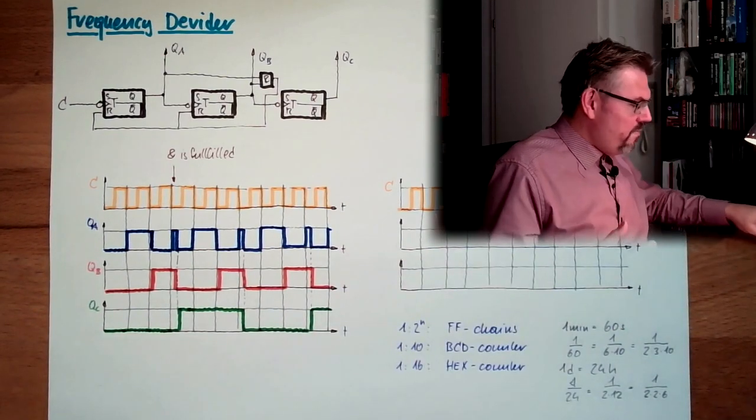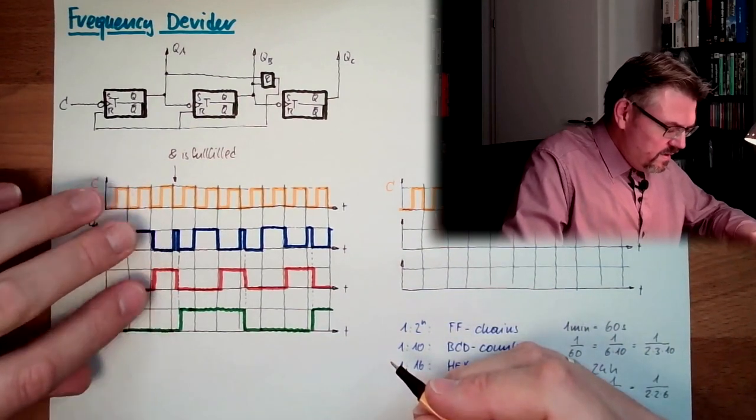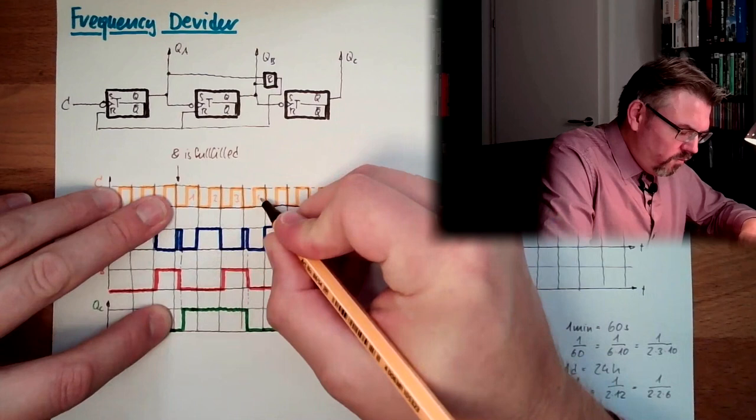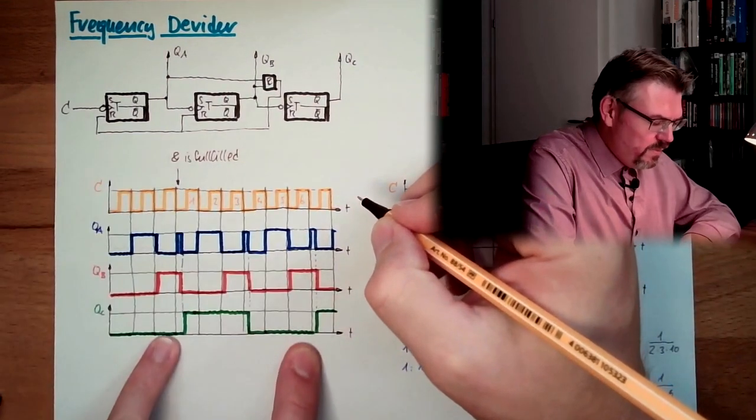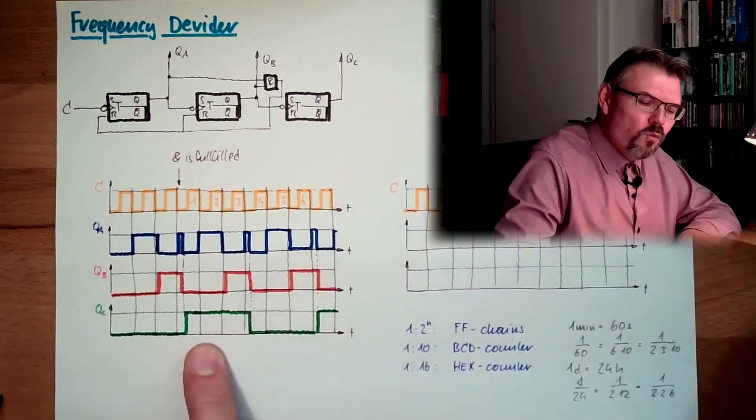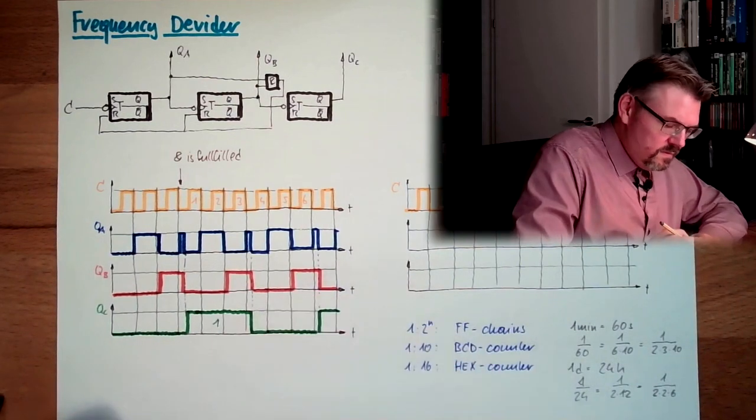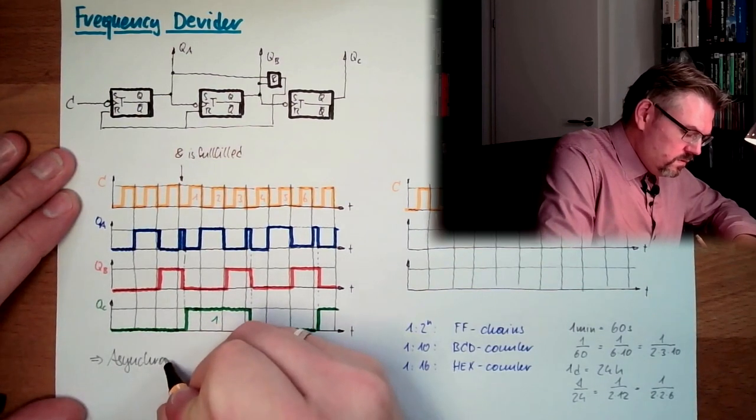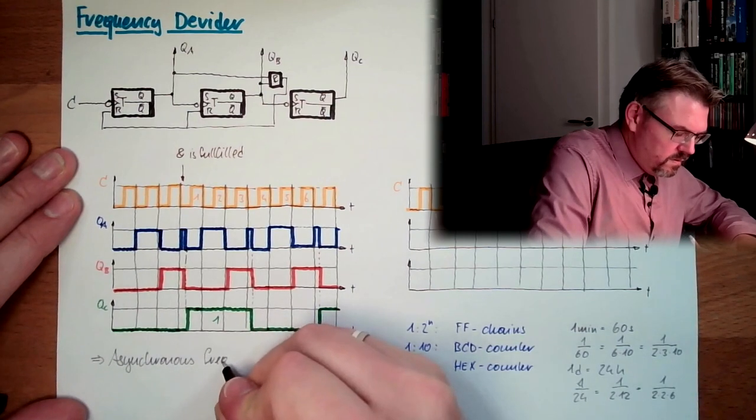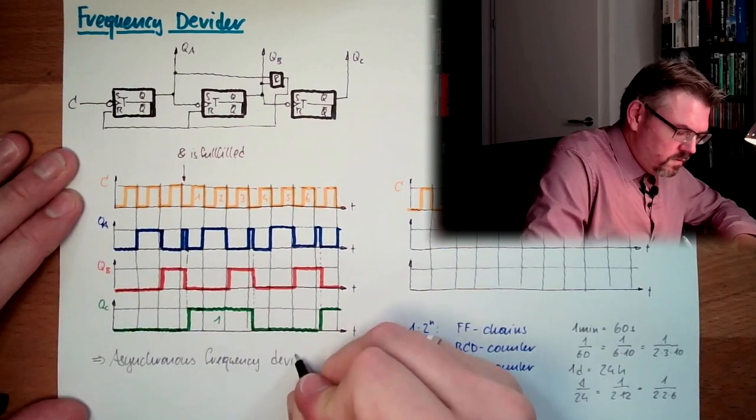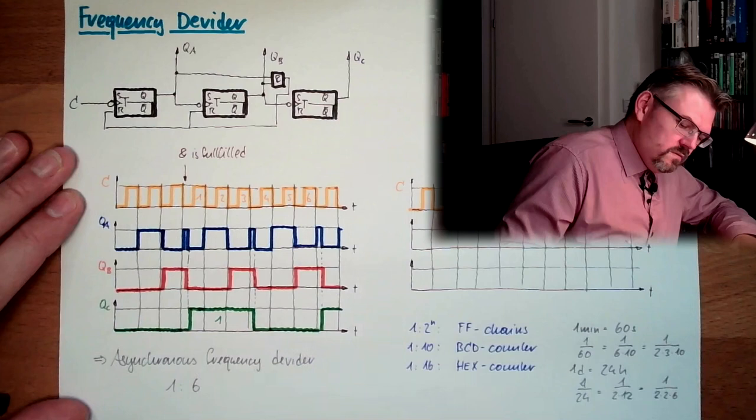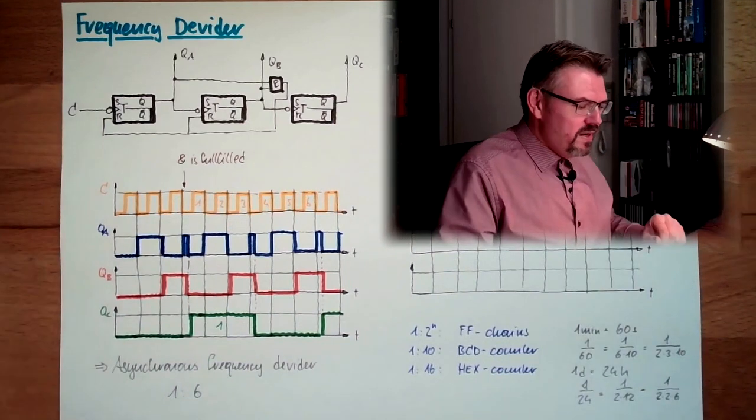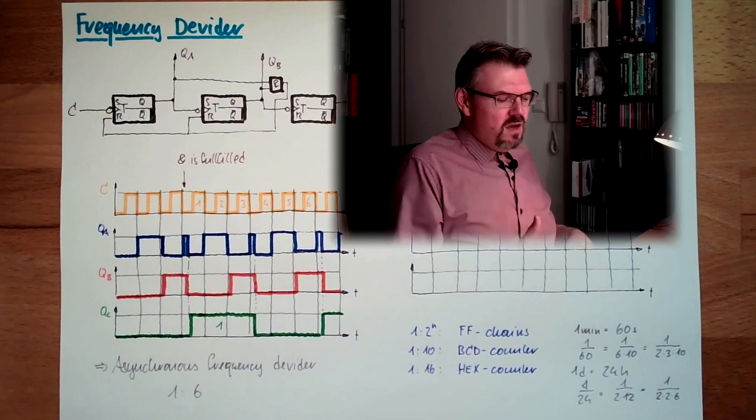And now let's see how many pulses we had here. Let's say, let's start here, where we changed this. One, two, three, four, five, six. And then we are at the beginning again. Six pulses. And here we had one. This is an asynchronous frequency divider in the ratio one to six. This is what we needed here. This is one possibility. And also here is no issue if it's asynchronous or not, because it will just be shifted.